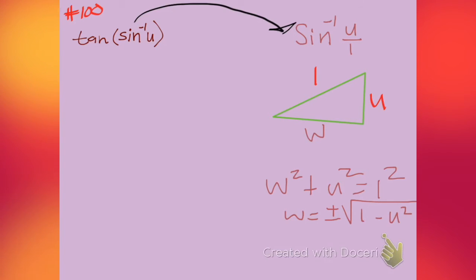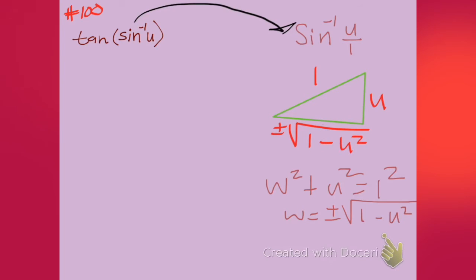And we see that w is going to be plus and minus. Why? Because whenever you take the square root of both sides, you're not going to forget the plus or minus. 1 minus u squared. So let me just write that there. Plus or minus.